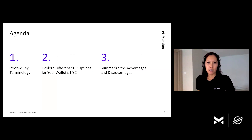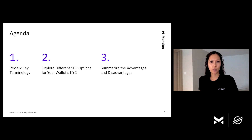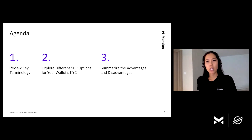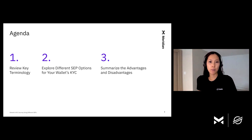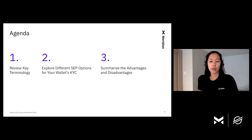My goal for this talk is for anyone who has little to zero knowledge of Stellar to understand what the advantages and disadvantages are for the steps that involve KYC. First we will review key terminology — what Vibrant, SEPs, KYC, and anchors are. Then we will explore different SEP options for your wallet's KYC, and end with a summary of advantages and disadvantages.